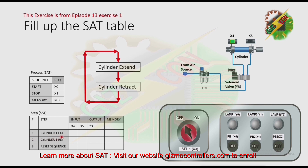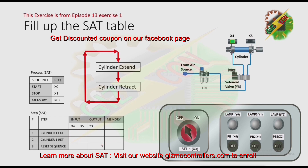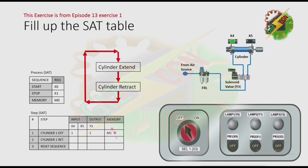Let's go to step 1: cylinder extend. The first thing you need to analyze is what is the requirement so that the cylinder will extend. The requirement is that the cylinder must be at the fully retracted position before it extends. We put 1 here at x4, which represents the fully retracted position, and we put 1 at y3, indicating that if x4 is energized, y3 will turn on. For the memory, I choose m1.